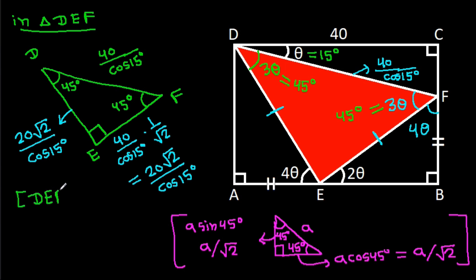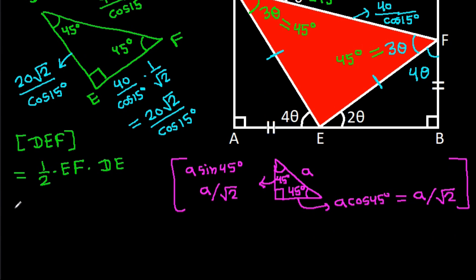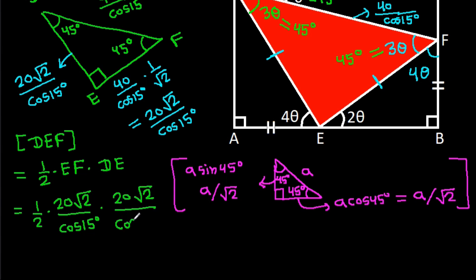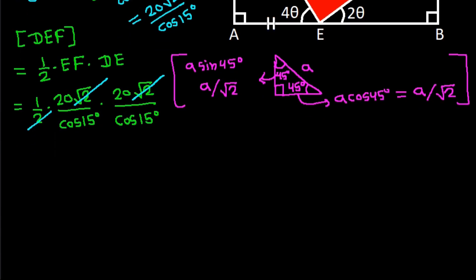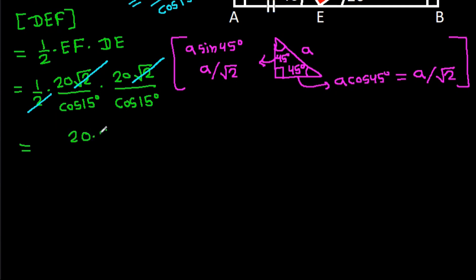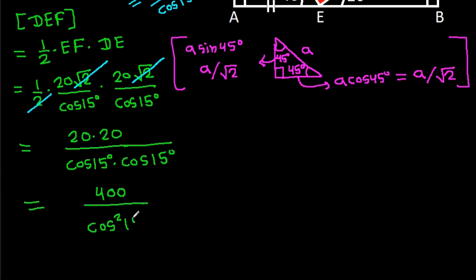Now area of triangle DEF equals one half times base EF times height DE. That is one half times (20 root 2 over cos 15 degrees) times (20 root 2 over cos 15 degrees). Root 2 times root 2 and 2 cancel, giving 400 over cos squared 15 degrees.